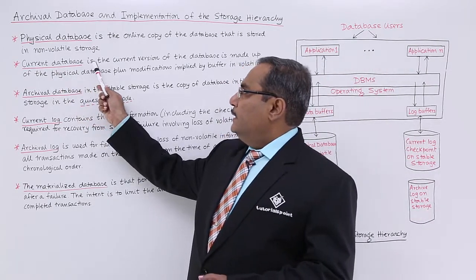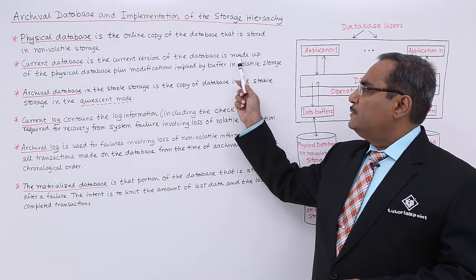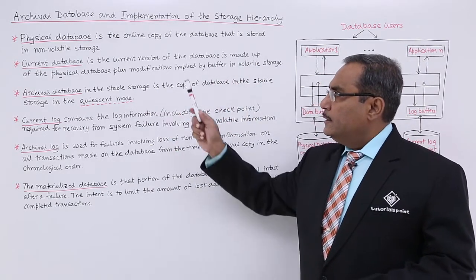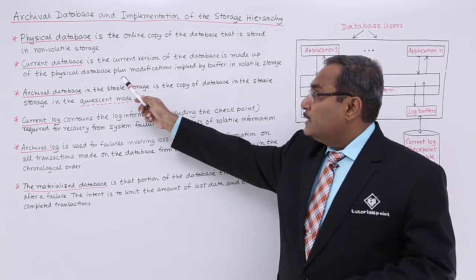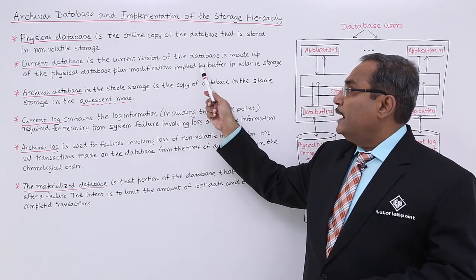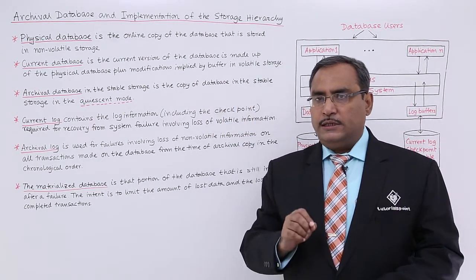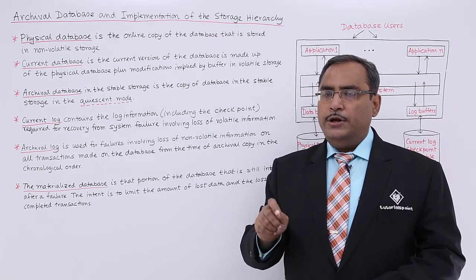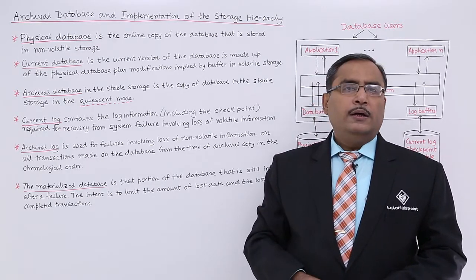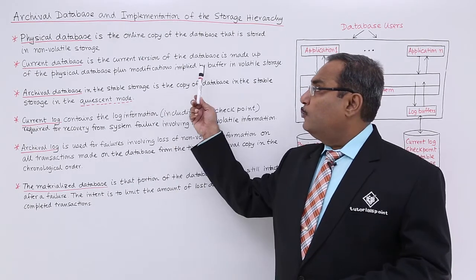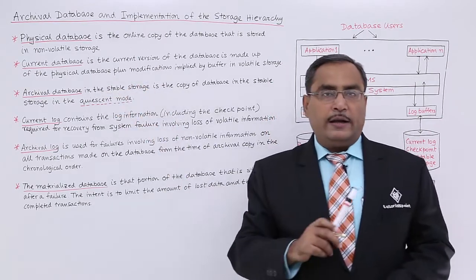What is the current database? The current database is the current version of the database, made up of the physical database — that is, the database on the non-volatile storage — plus modifications implied by the buffer in volatile storage. Whenever you are doing modifications, before they are completed, the modification results will be stored in volatile memory. That volatile memory content combined with the physical database makes the current database.